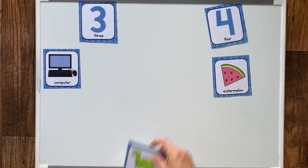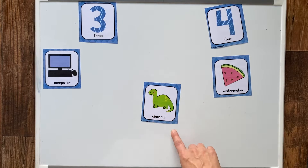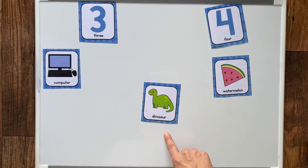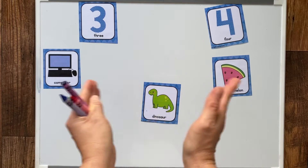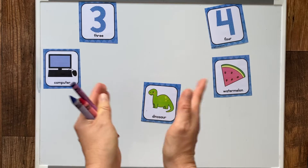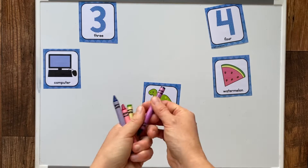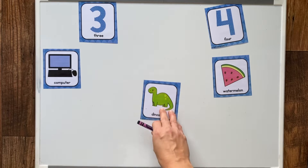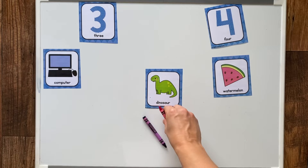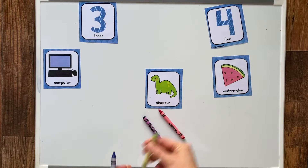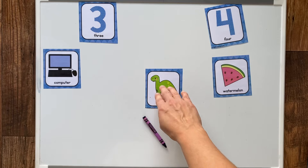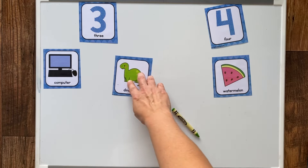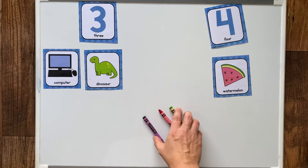Let's look at this guy — dinosaur! Let's clap it. Dinosaur. Let's lay down our crayons. Di-no-saur. That's three crayons. That's three syllables. Let's move it with the number three.